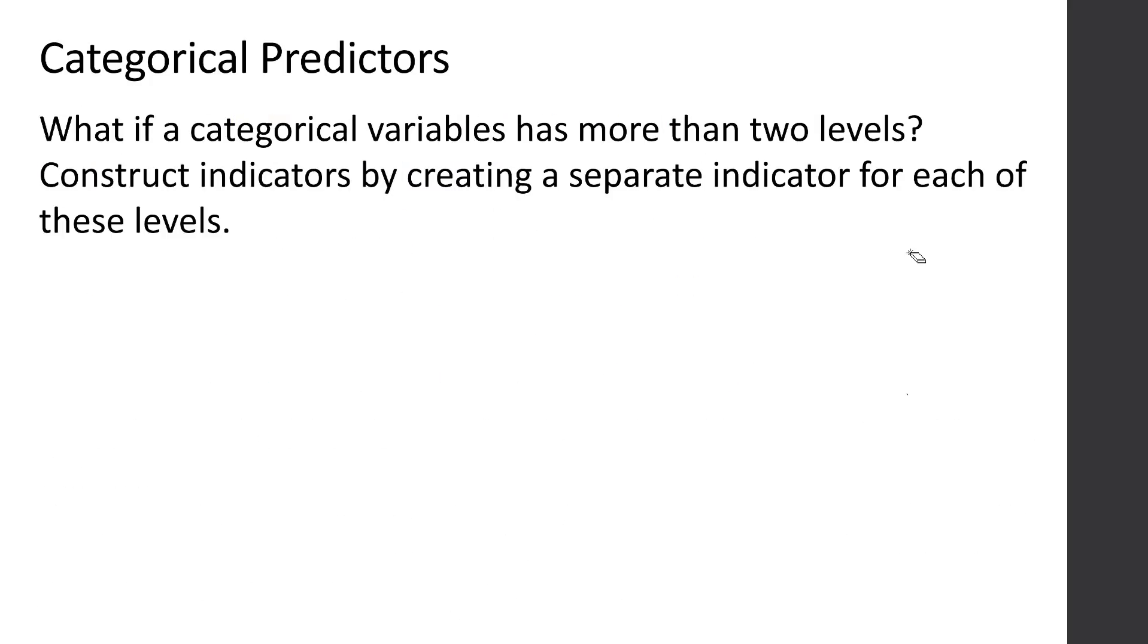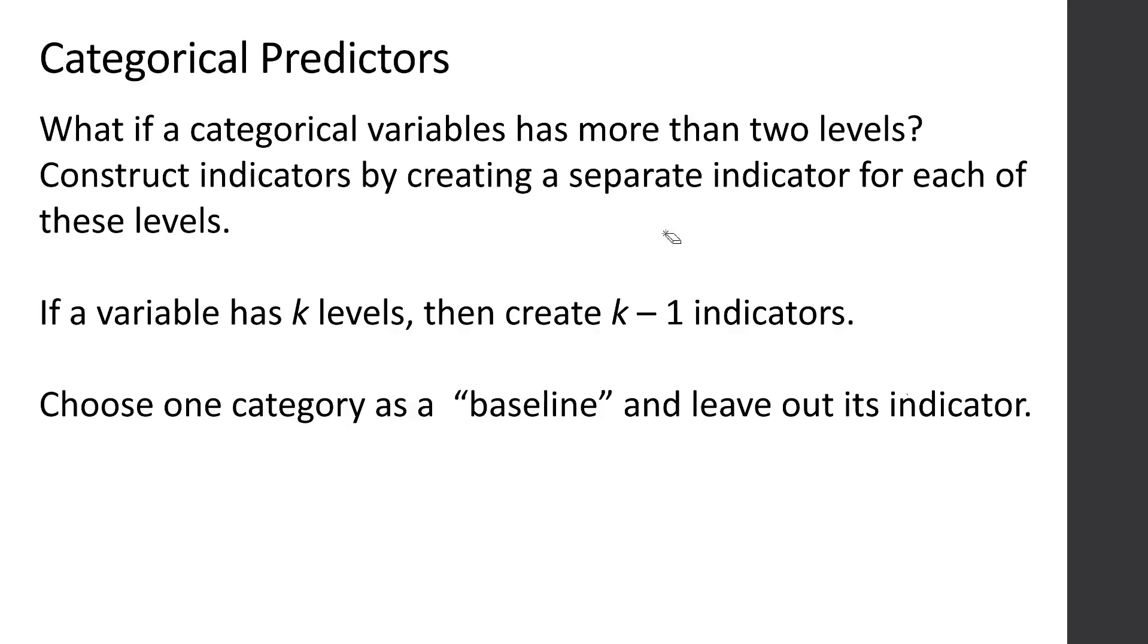What if a categorical variable has more than two levels? We're going to construct indicators by creating a separate indicator for each of the levels, but we're only going to do that for k minus 1 of the indicators. In our inversions, we had two levels of our categorical variable, yes or no, and we only needed an indicator variable for the yes, because we could just put a 0 in to get the no. It's going to be the same deal when we have more levels. We can put a 0 in for all of the k levels to get that last level. We're going to choose one category as a baseline and leave out its indicator.